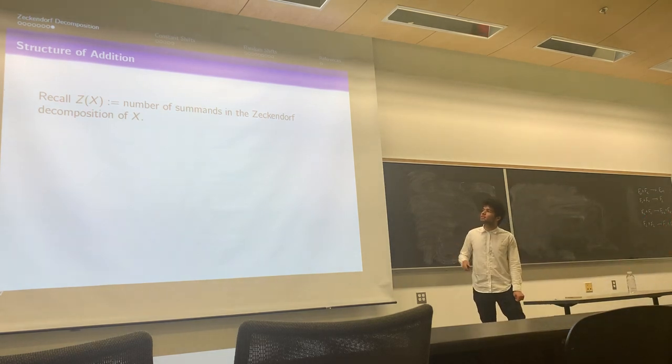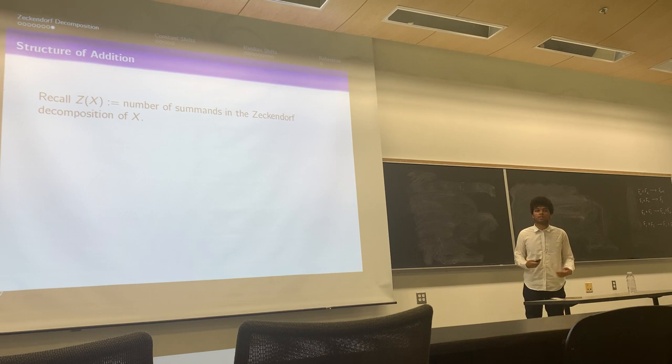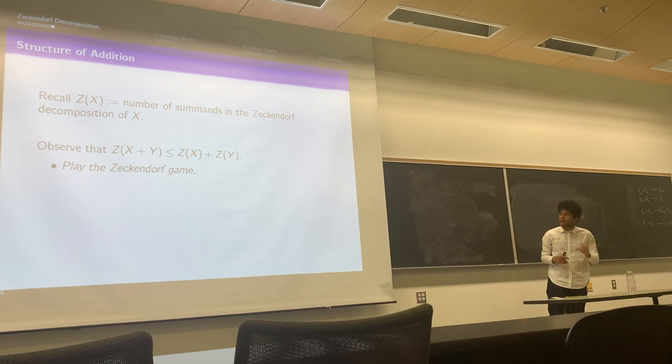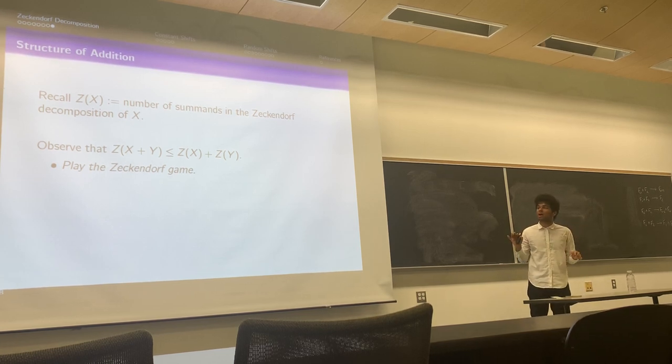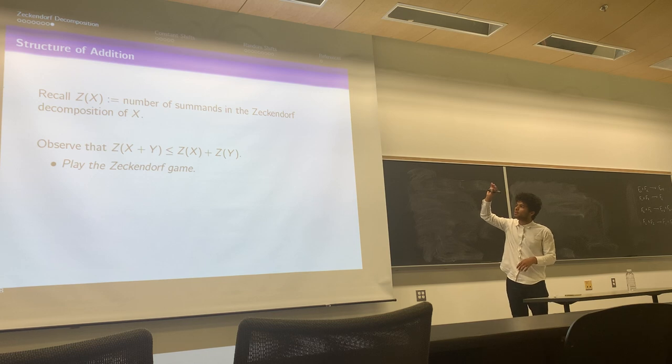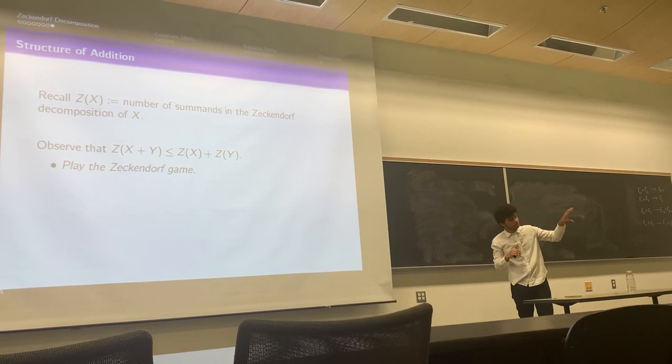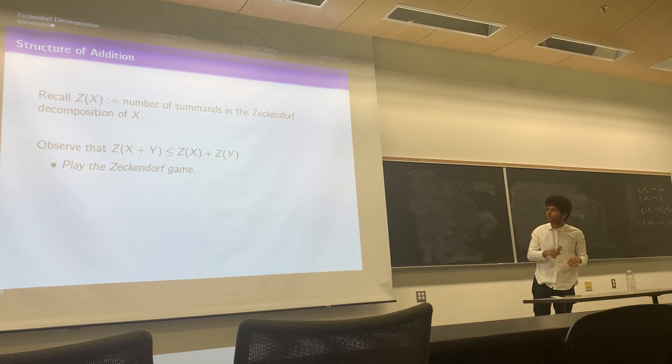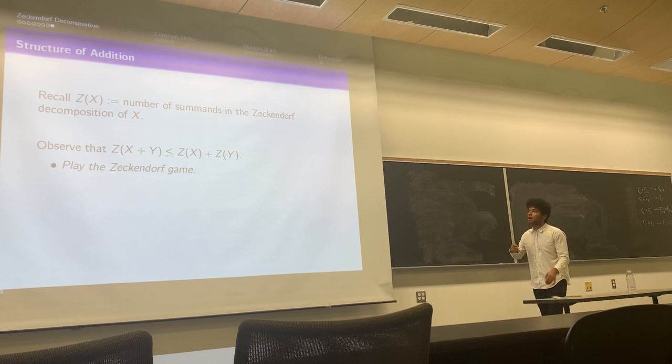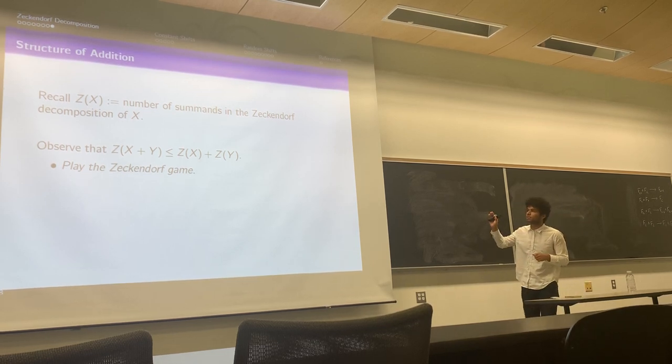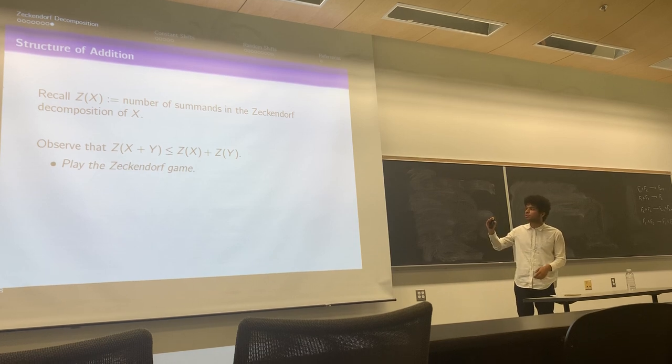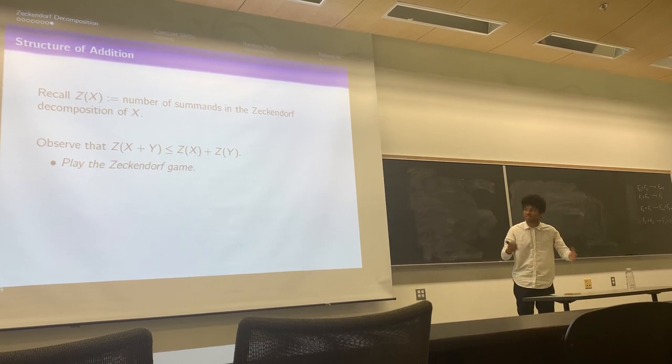We call Z(x) the number of summands in the Zeckendorf composition. The nice thing about this game is that we can observe that if we compare the Zeckendorf composition of x and Z(x) and Z(y) separately, we have an inequality compared to Z(x+y). You can write the Zeckendorf composition of x, write the Zeckendorf composition of y, sum them trivially, and you're going to have Z(x) + Z(y) terms. Whenever you play the Zeckendorf game, all moves either make the number of tokens the same or decrease the number of summands. At the end, you're going to have at most Z(x) + Z(y), but you have exactly Z(x+y).